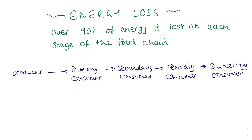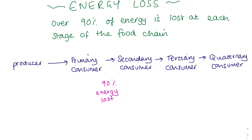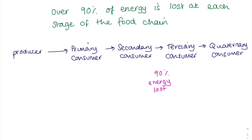Very rarely do food chains consist of five trophic levels — usually there is no quaternary consumer. The reason for that is the huge amount of energy loss which occurs between each stage of the food chain. Because 90% of energy is lost between the producer and the primary consumer, and the same is true at each subsequent stage, that energy just runs out. Only rarely does a quaternary consumer exist, such as in food chains supported by the sea, where so much sunlight reaches the algae and plankton.